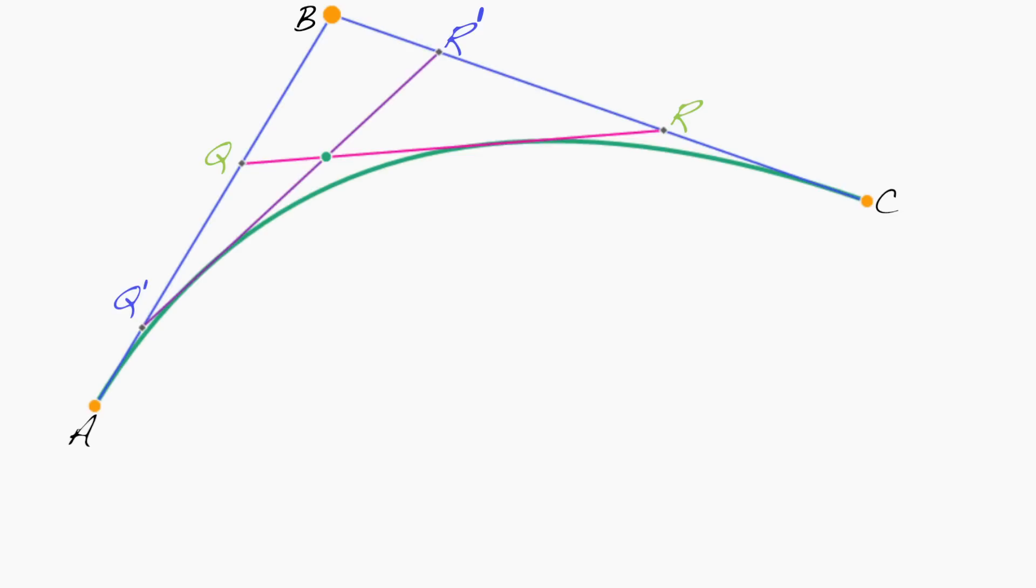Now let's start writing down a few things we know. Well, we know that q is a fraction t along the line segment AB, which means I can write q as (1-t)A + tB. Similarly, r is a fraction t along the line segment BC, so it can be written as (1-t)B + tC.